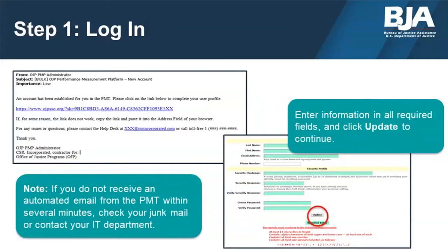Here's an example of the email new users will receive when their account is created. To set up a new user account, click on the link in the email. Passwords must be at least 12 characters and contain at least one uppercase letter, one lowercase letter, one number, and one special character. If you request a password reset, you will not be able to use the same password as one used within the last 24 password change requests. If you do not receive an automated email from the PMT within several minutes, check your junk mail or contact your IT department to ensure there are no firewalls blocking delivery.